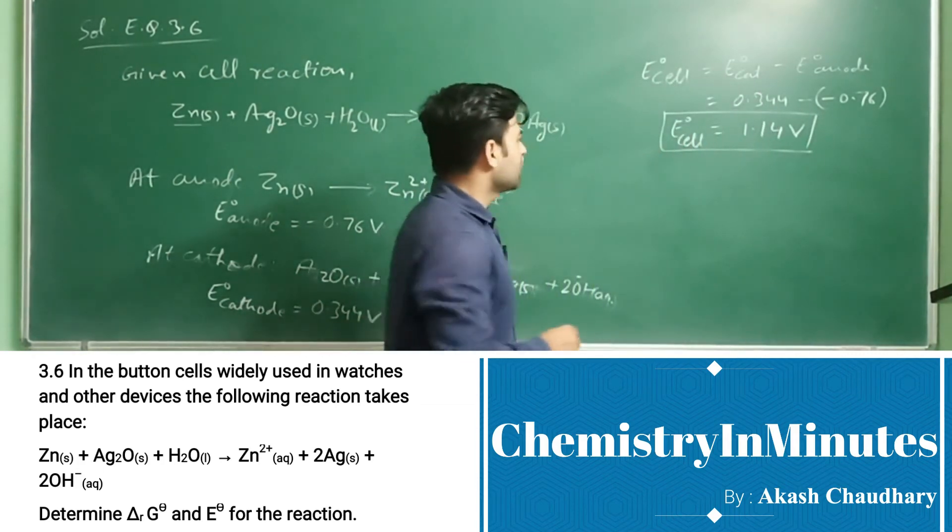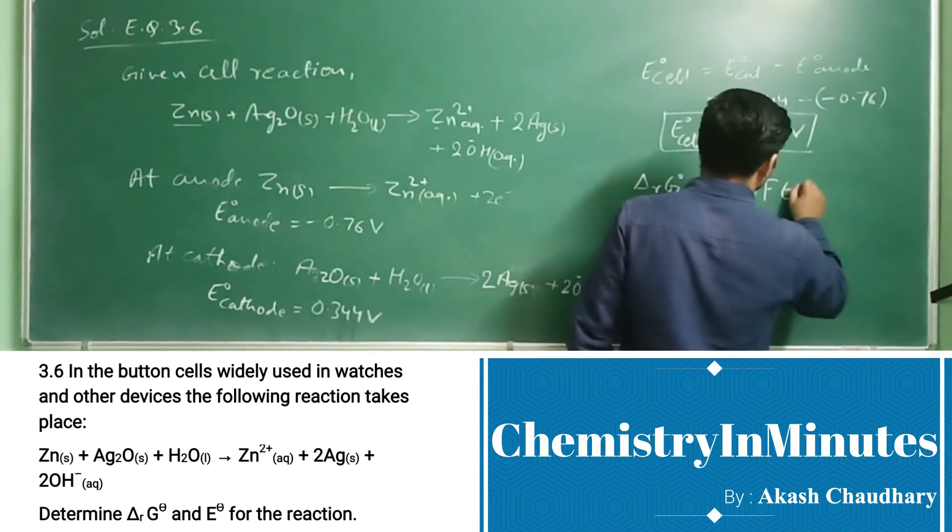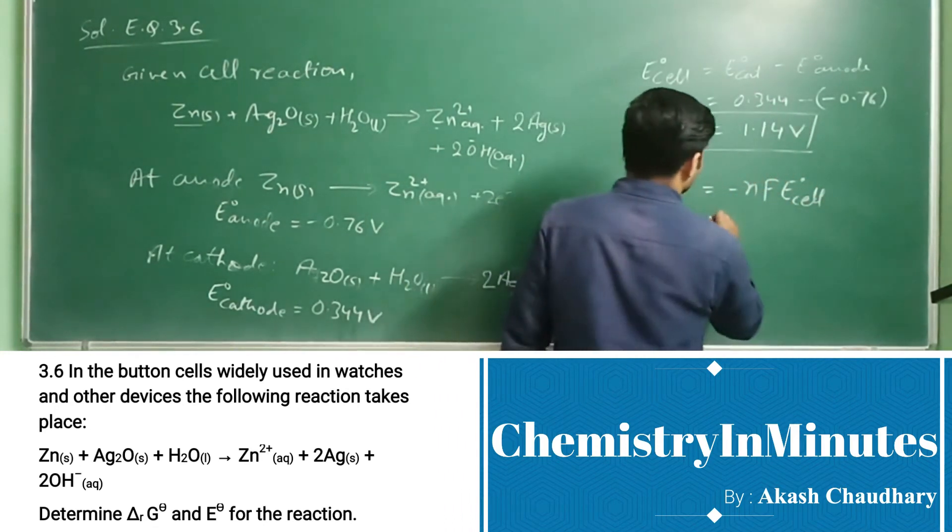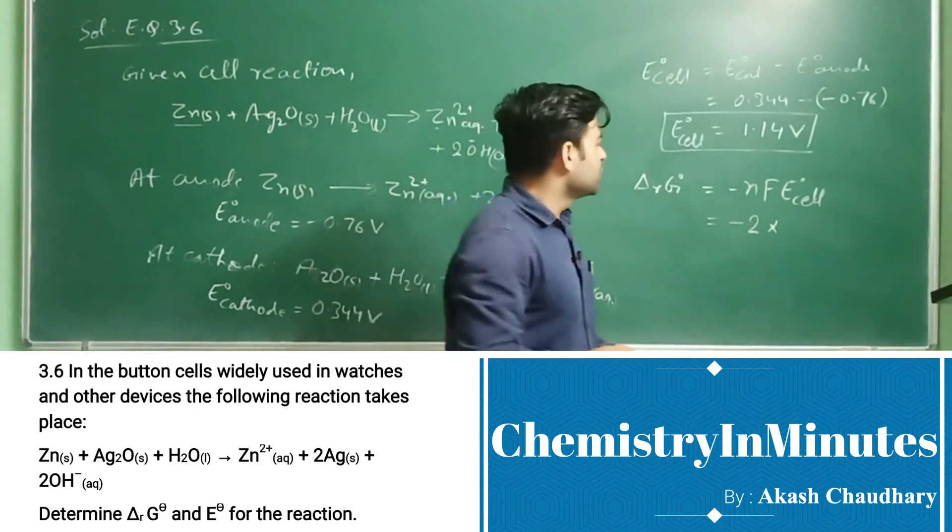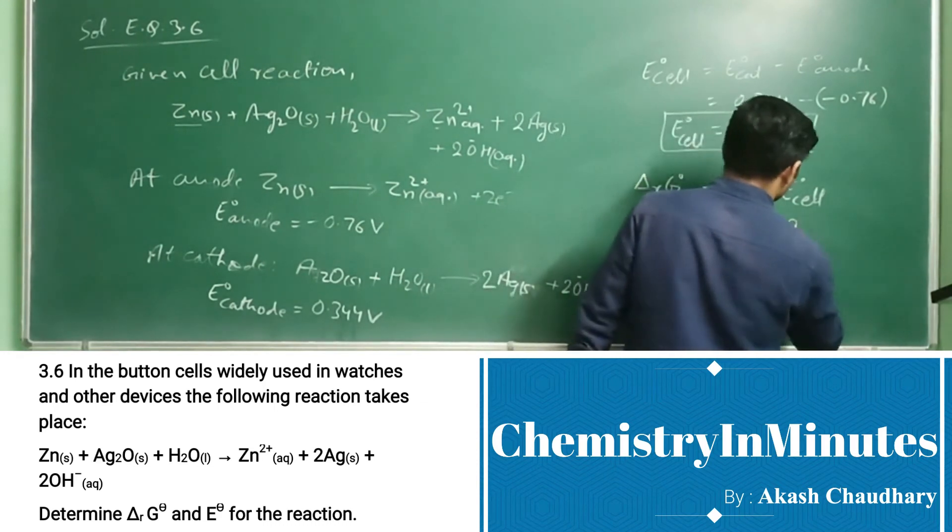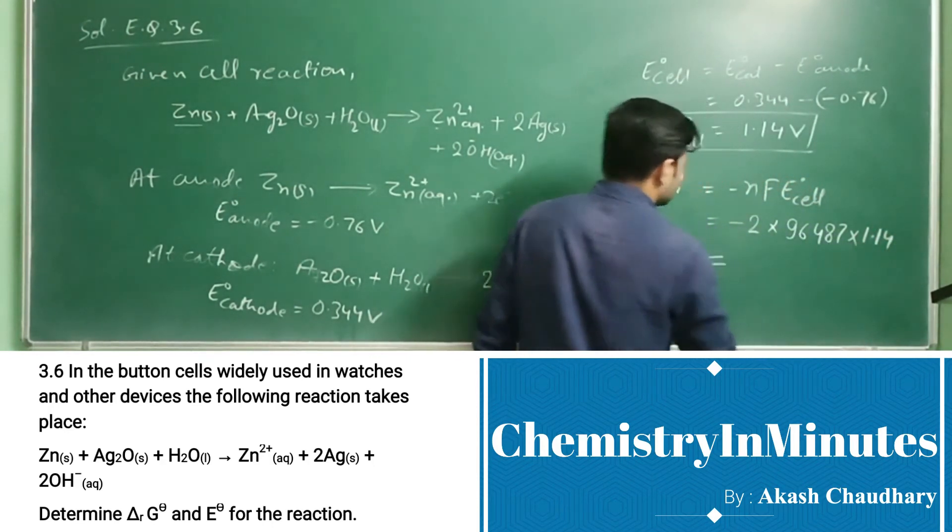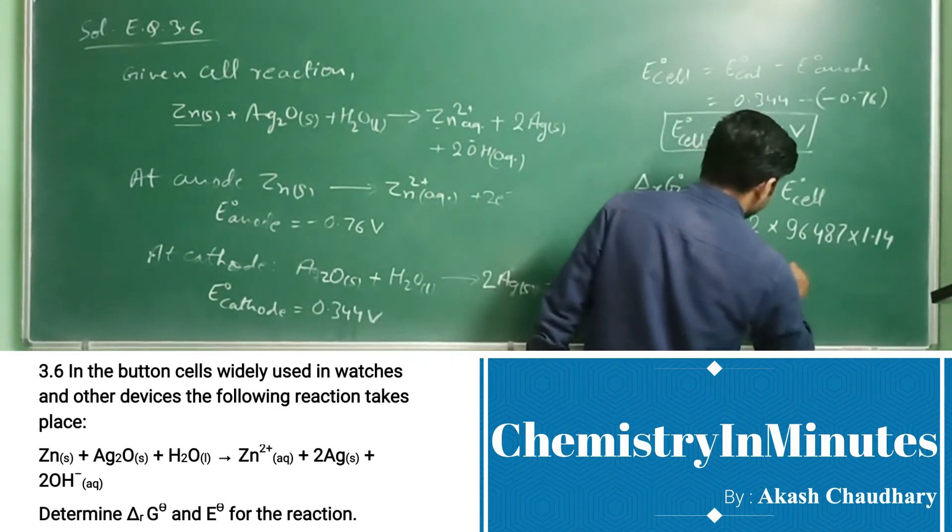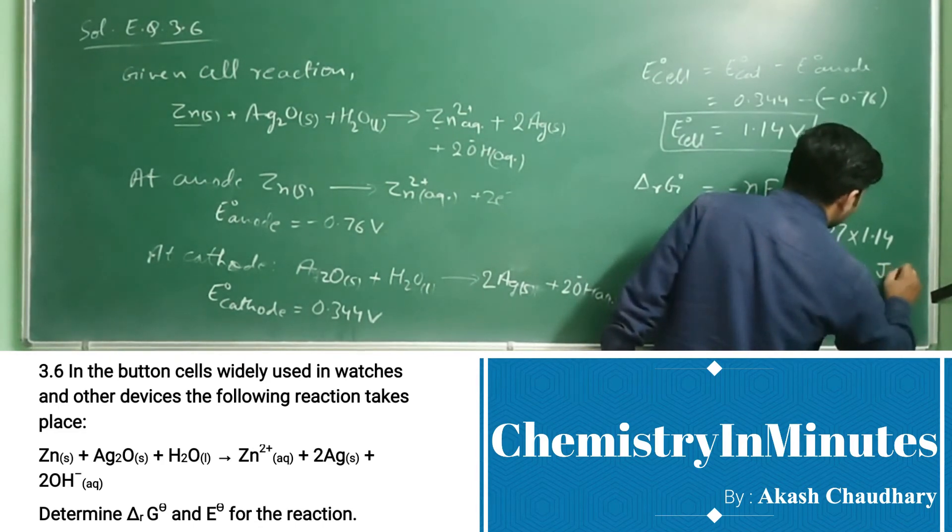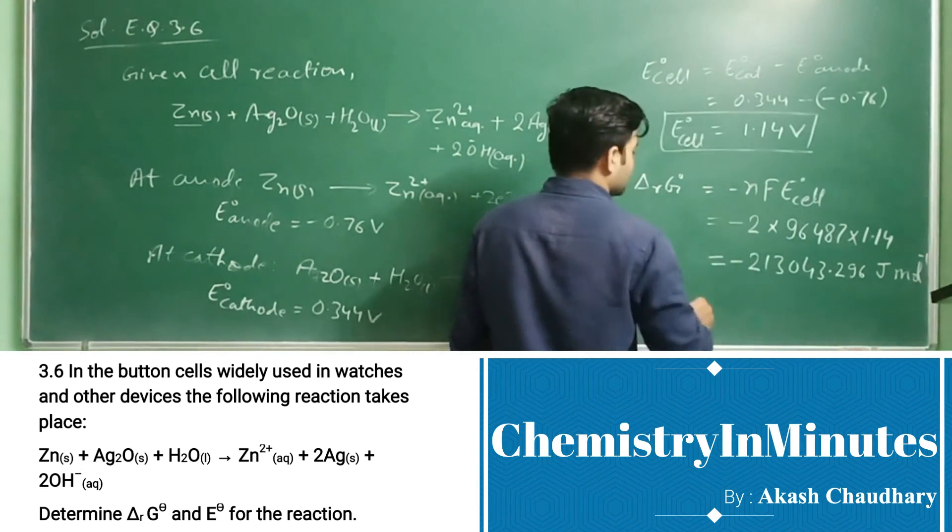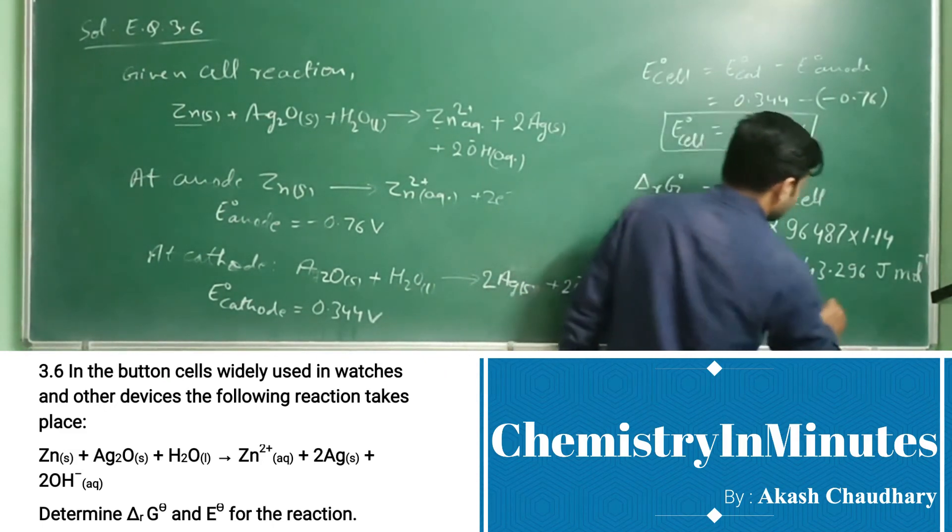Now, for delta Rg0, delta Rg0 is minus NfE0 cell. Putting the values: minus 2 - N is 2 here because there is change of 2 electrons in this redox reaction. F is 96487 into 1.14. On solving this, we will get 213043.296 Joule per mole. This can be written as minus 213.043 kJ per mole.